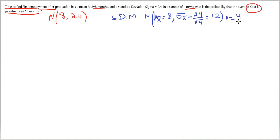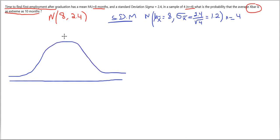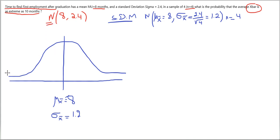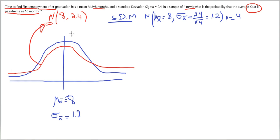If I draw the sampling distribution of the mean for n=4, it has μ_X̄=8 and σ_X̄=1.2. The original distribution is also normal (by assumption), but it will be a little flatter. I'm not interested in the original distribution here — I'm interested in the sampling distribution of the mean.